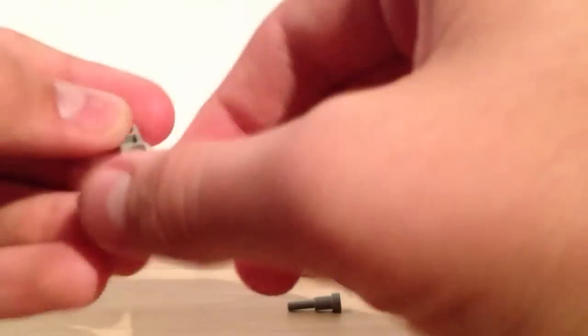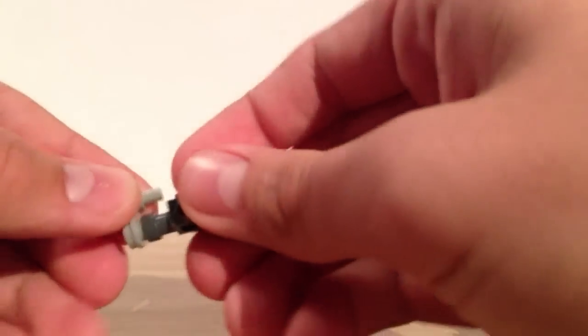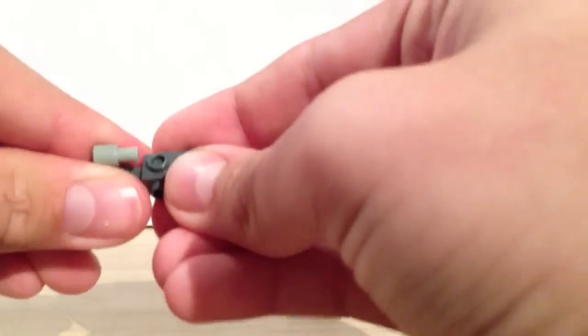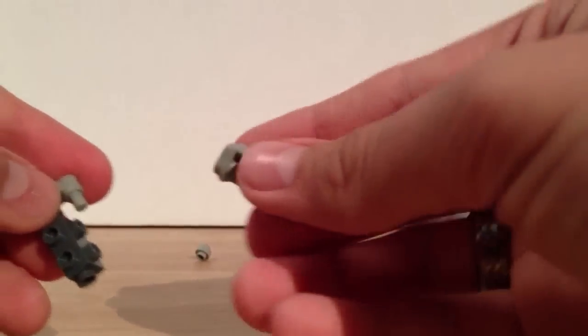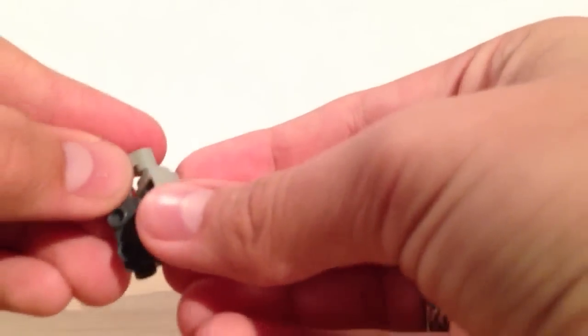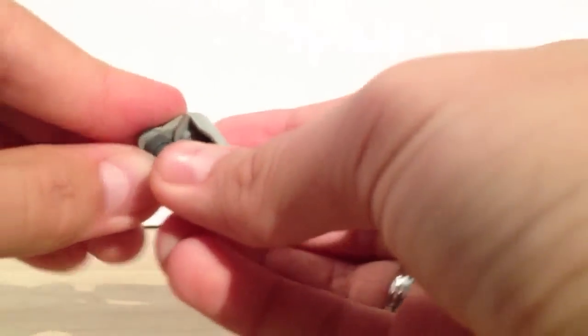You plug this piece into the bottom of this, like so. Then you take the cannon and plug that in right there. This makes a big old backpack. Then you take these two little antenna pieces and put one on each side.